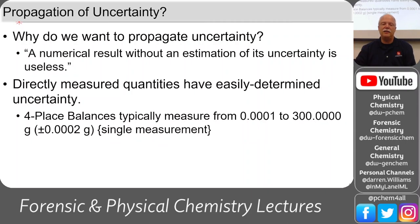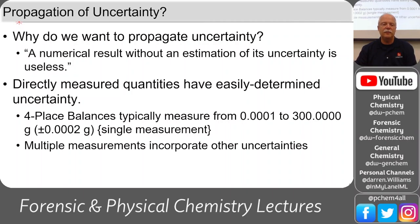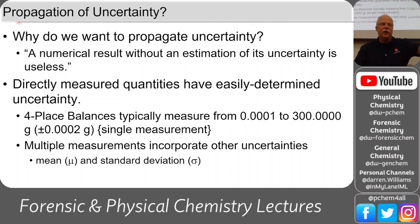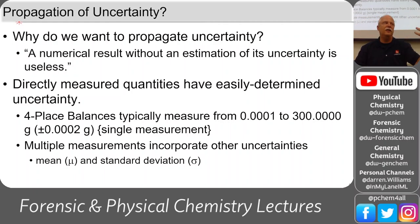A four-place balance typically has ±2 in the last decimal place for a single measurement, but multiple measurements incorporate other uncertainties. We could take single measurements of volumes and do propagation of uncertainty through one run, but typically we do multiple runs and calculate the standard deviation that way.